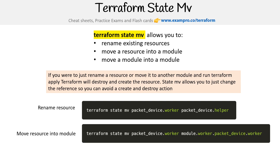If we wanted to move a resource into a module, we would do something like packet_device.worker, and then do module.worker.packet_device.worker. The idea here is that we're moving it into this module. We could probably even rename it at the same time, but we're not doing that.